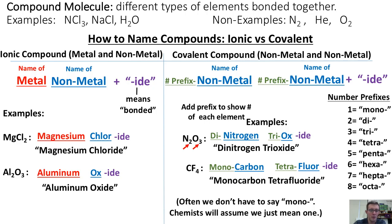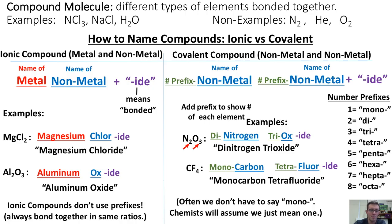The other thing to note is that ionic compounds don't use prefixes. Because the elements involved in an ionic compound always bond together in the same ratios — for instance, one magnesium will always bond with two chlorines — chemists don't put any prefixes in front of them.